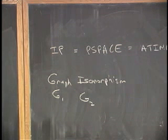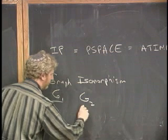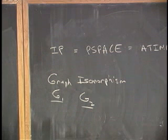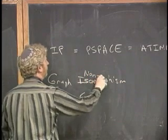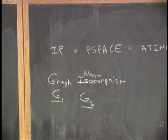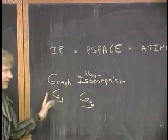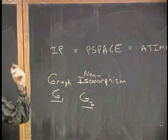Now here's the conversation we're going to have. There are two graphs, G1 and G2. I want to be convinced that they are not isomorphic. We're going to do graph non-isomorphism. No way to do this in non-deterministic polynomial time, but there is a way to do it in this style. I want to be convinced they're not isomorphic. I want you to help me.